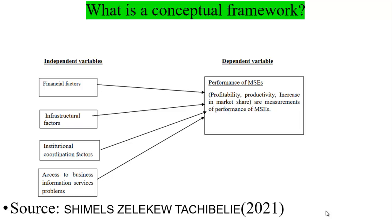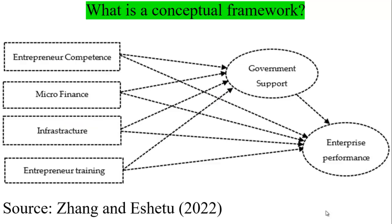In another example, enterprise performance — performance of micro and small enterprises — was treated as the dependent variable, and the independent variables were entrepreneur competence, microfinance, infrastructure, entrepreneur training, and access to finance.